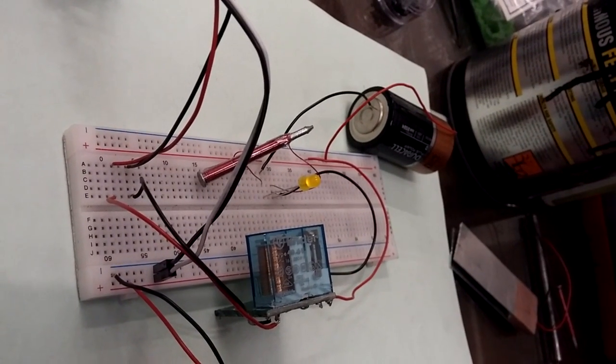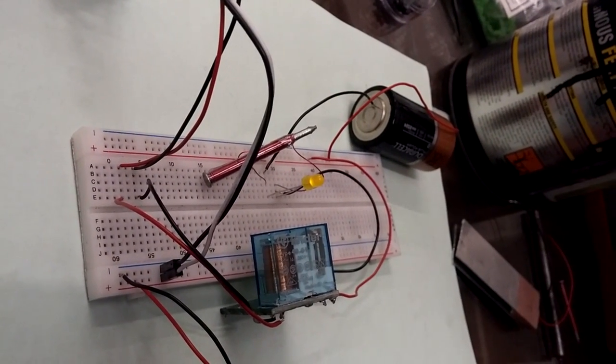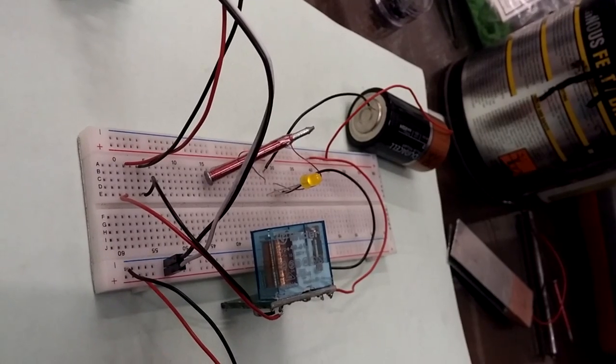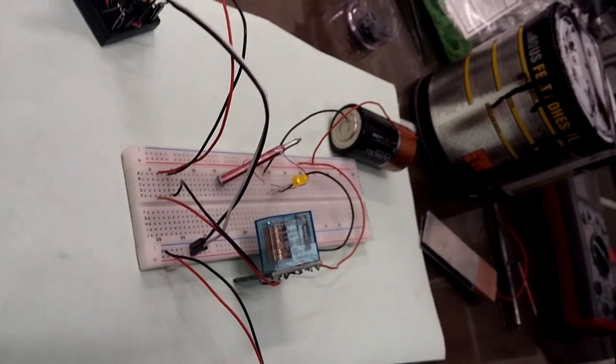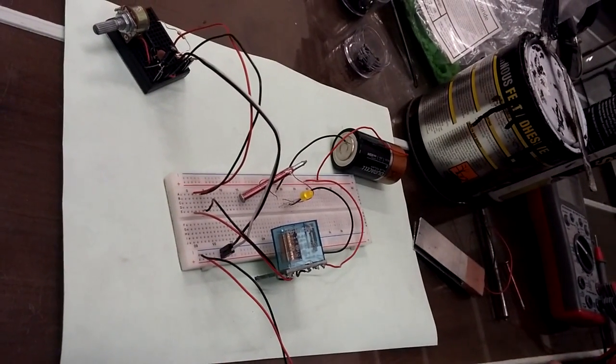Now, in the joule thief circuit, which I'm going to explain shortly, the oscillation is around 20,000 times a second. So you will not see any flickering at all.